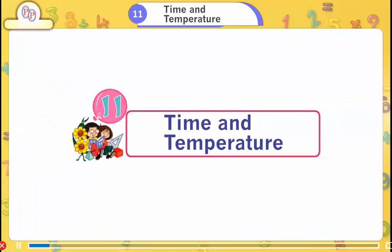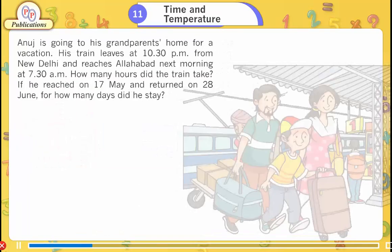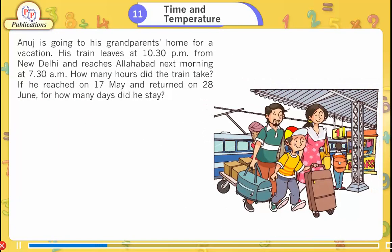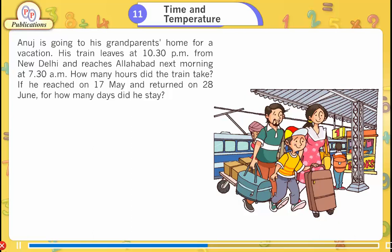Lesson 11: Time and Temperature. Anuj is going to his grandparents' home for a vacation. His train leaves at 10:30 PM from New Delhi and reaches Allahabad next morning at 7:30 AM. How many hours did the train take? If he reached on 17th May and returned on 28th June, for how many days did he stay?